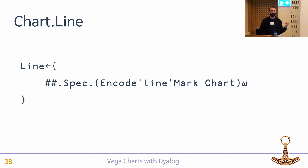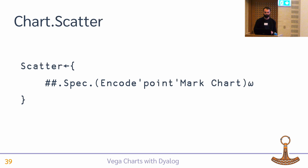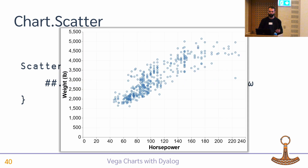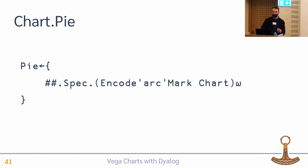The line function looks shockingly similar to the bar function — you literally just change the mark type from bar to line and everything else works the same way. Scatter is the same thing with points.